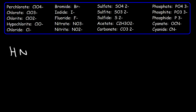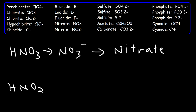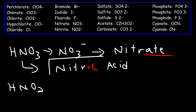Let's move on. Try these two: HNO3 and HNO2. What are the names of these two acids? Step one: identify the ion. HNO3 contains the nitrate polyatomic ion. Nitrate has the suffix '-ate', so anytime you see '-ate', we replace it with '-ic'. This becomes nitric acid. So HNO3 is nitric acid.